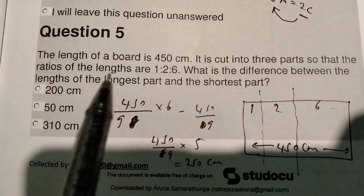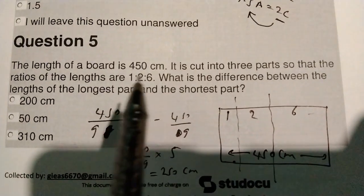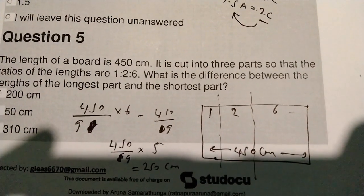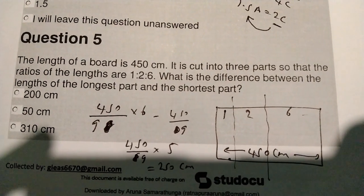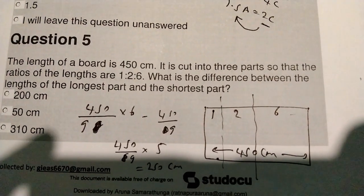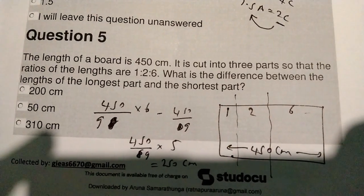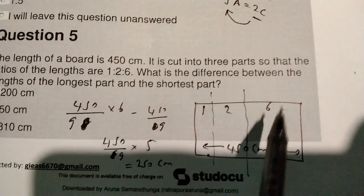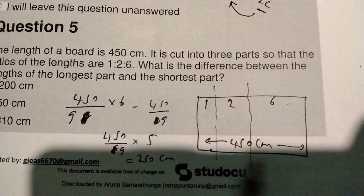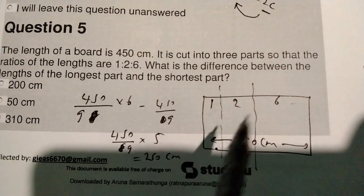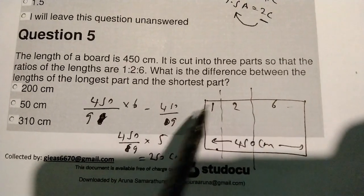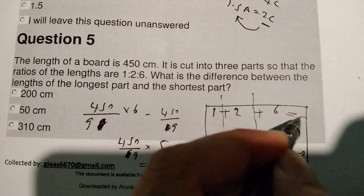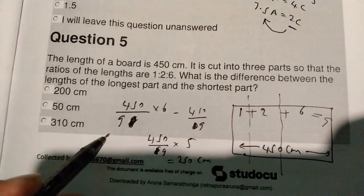The length of the board is 10 cm. It is cut into three parts so that the ratio of the lengths are 1, 2, 6. What is the difference between the length of the longest part and the shortest? This is the difference between the length of the longest part and the shorter.